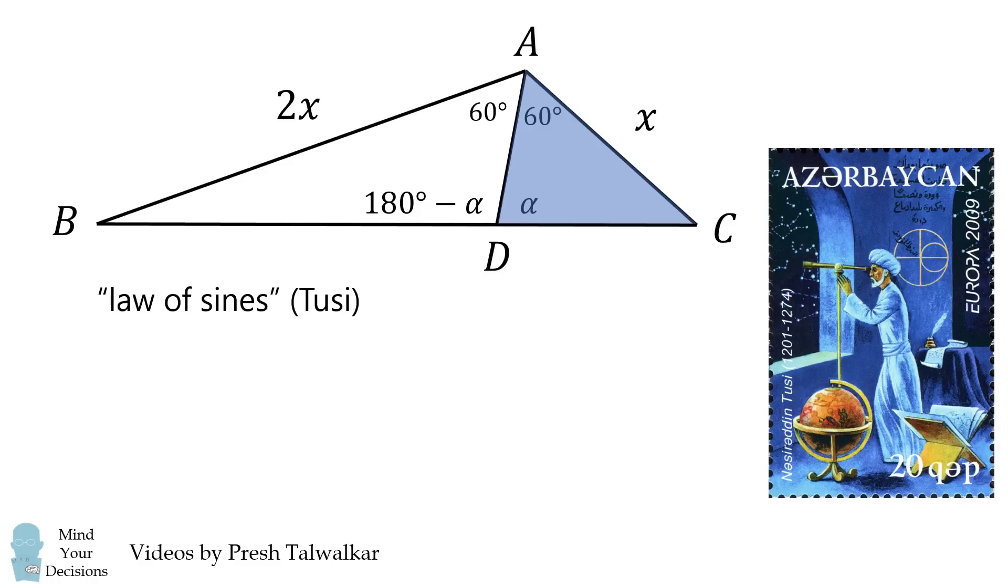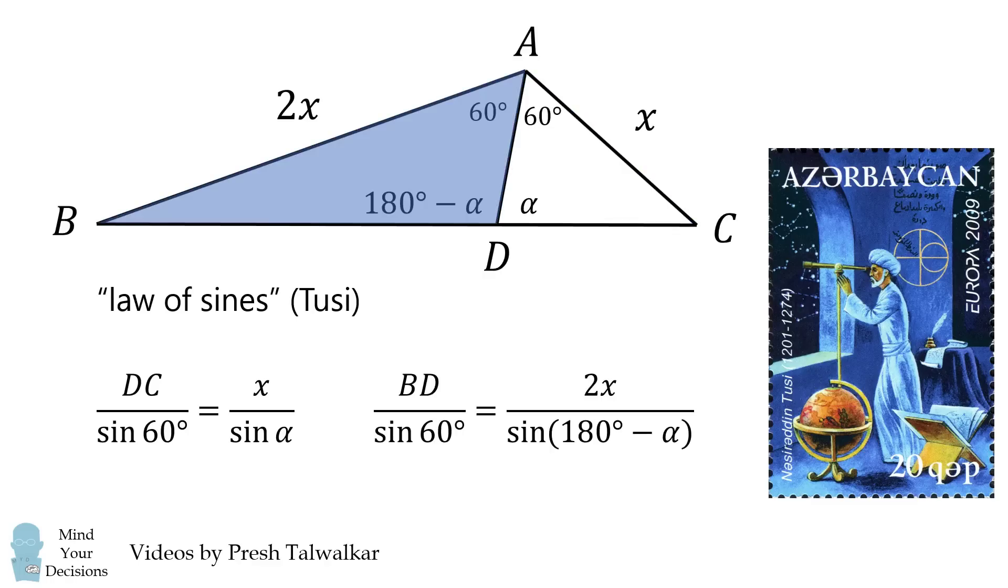So let's use the law of sines in triangle ADC. This gives that DC divided by the sine of 60 degrees is equal to x divided by the sine of alpha. Next, we'll use the law of sines in triangle ADB. This gives that BD divided by the sine of 60 degrees is equal to 2x divided by the sine of the angle 180 degrees minus alpha.